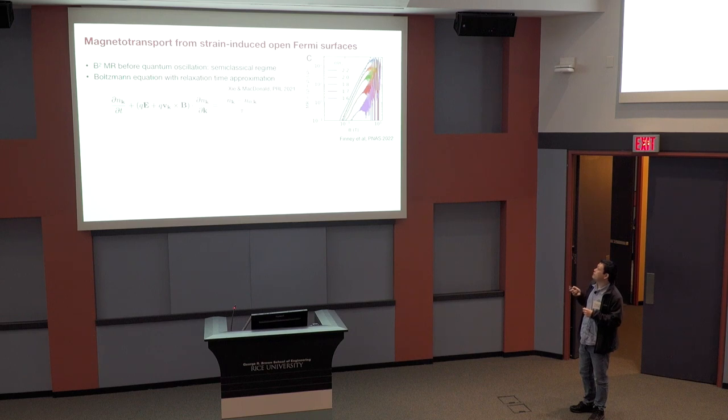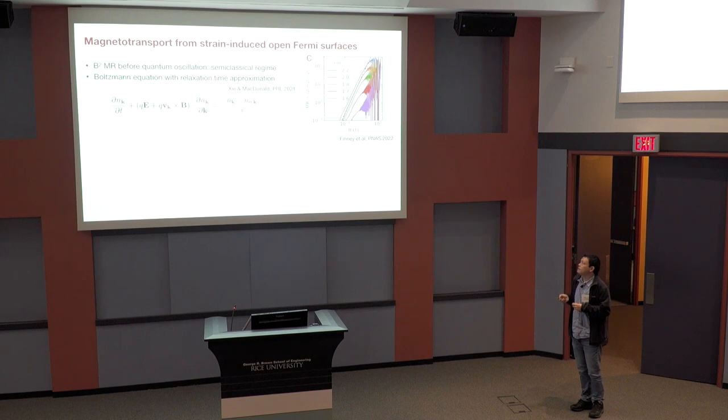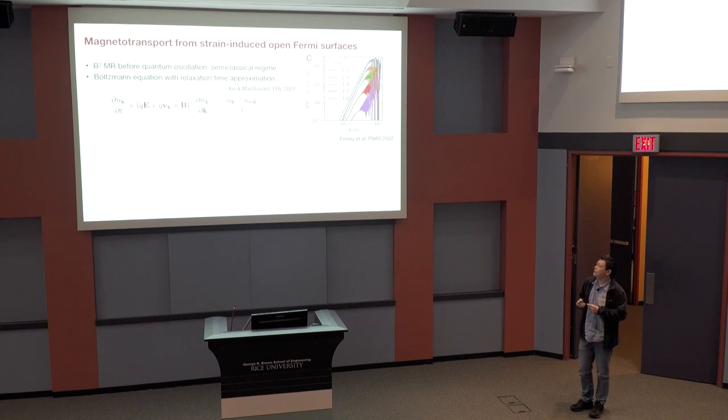To do this, we take the motivation that from the experimental plot. So this b-squared magnetoresistance occurs before the onset of quantum oscillations. So that allows us to do semi-classical Boltzmann-like calculations. And in particular, we do this with the constant relaxation time approximation that has been used by Allan's group previously. And also we consider an entirely filling independent relaxation time.